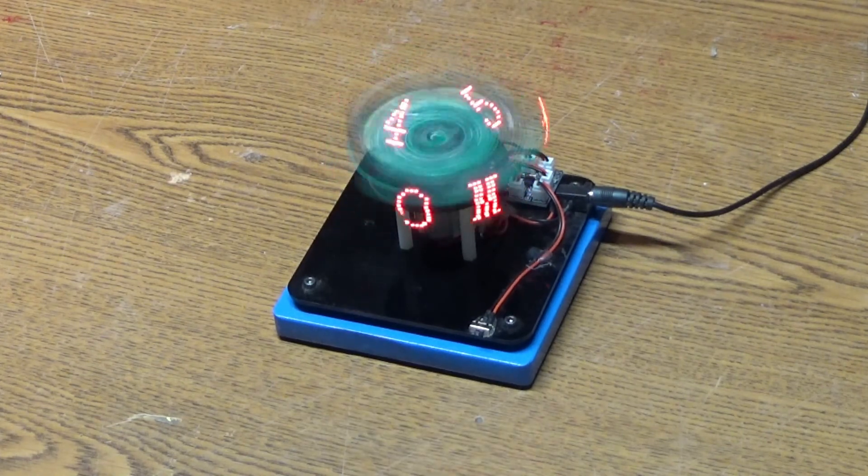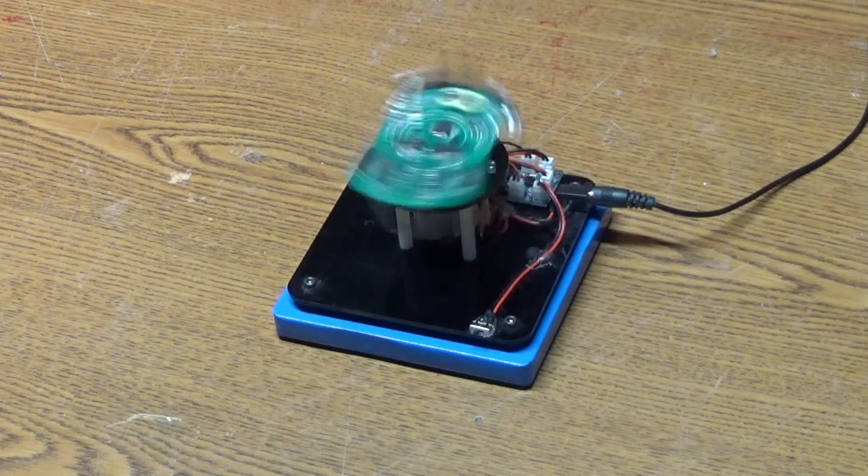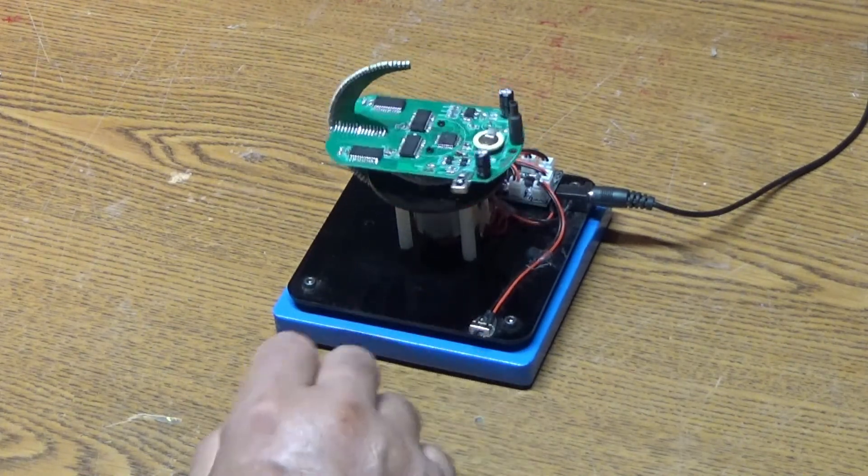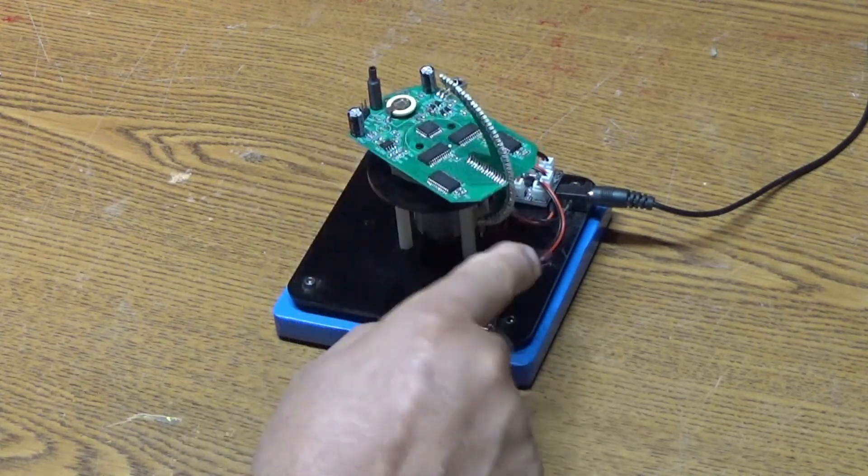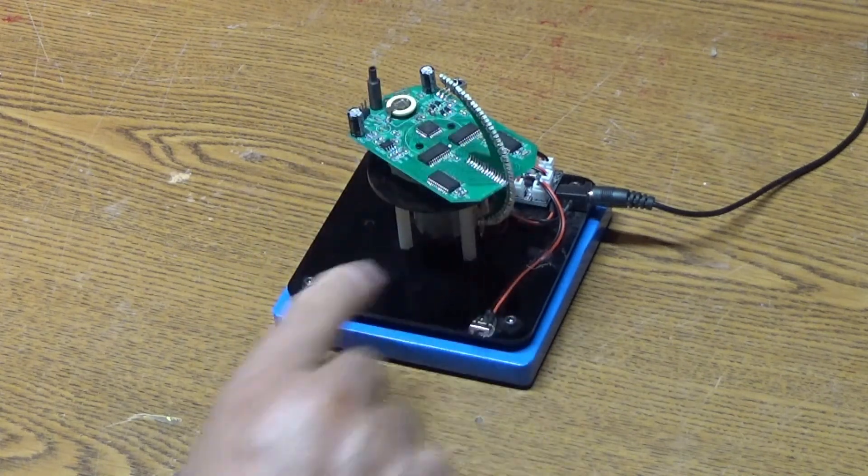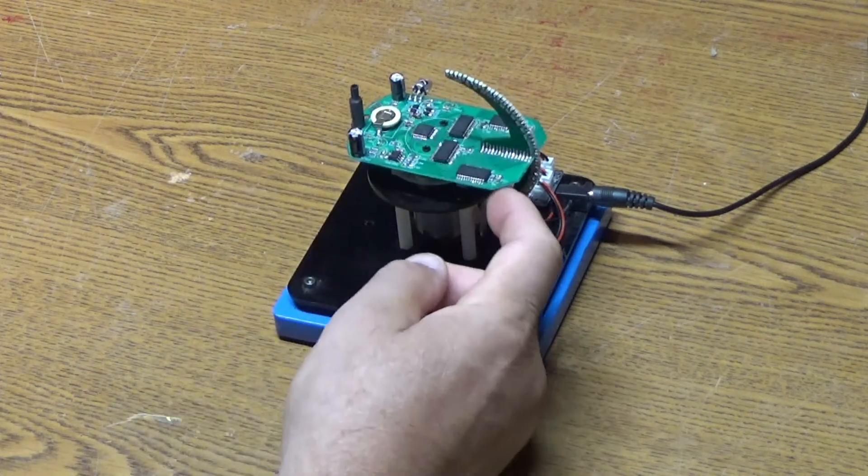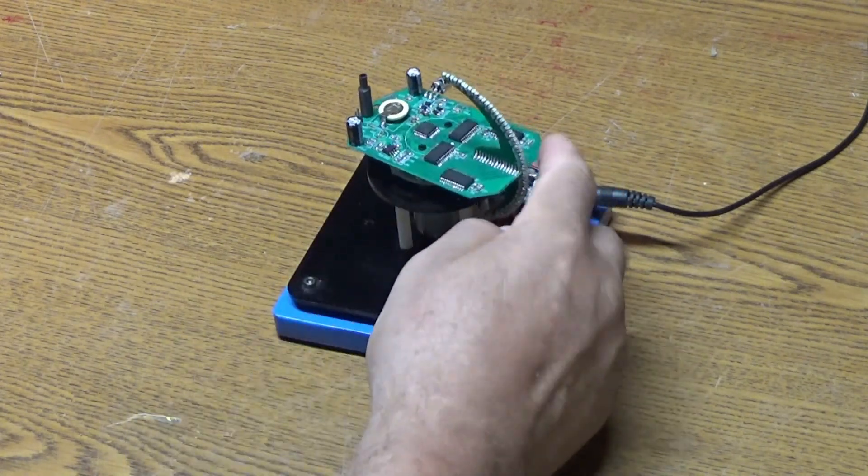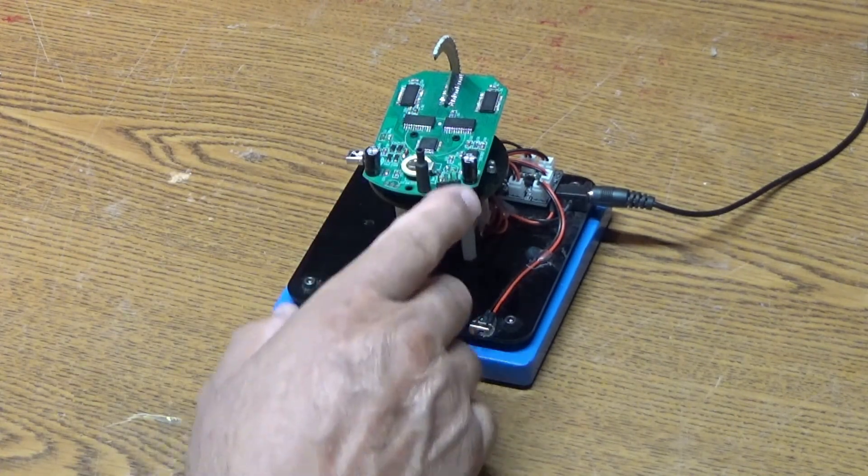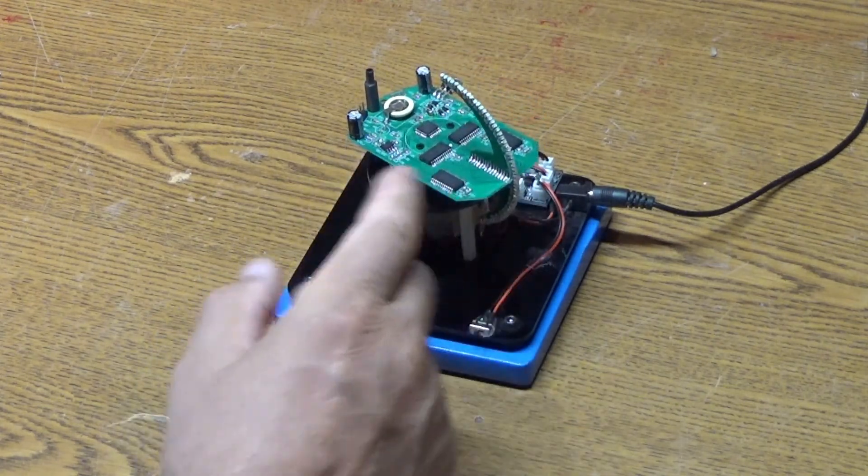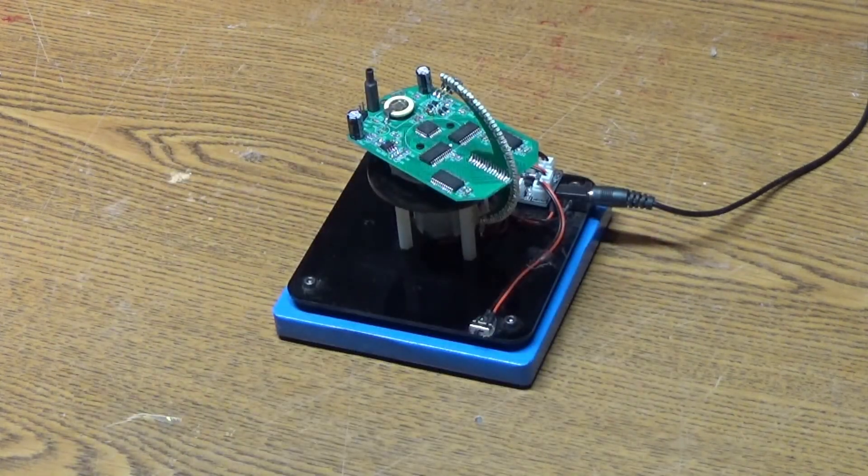But I'll shut it off here and I'll show you. It's POV or persistence of vision and so there are really only 56 LEDs in this, along this arc and as that spins there's a sensor that senses each revolution so that it can keep the timing correct. And then it turns off and on those LEDs to create over 8000 LED positions around this globe.